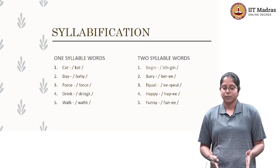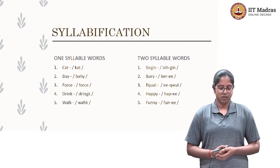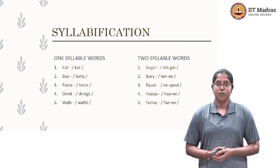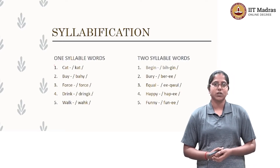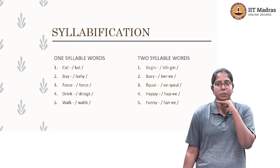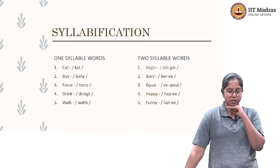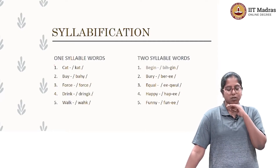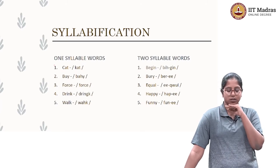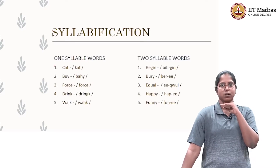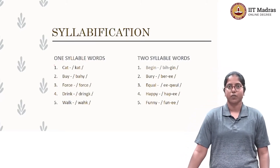Now let's look at syllabification — how many syllables these words have. Cat, buy, force, drink, walk. One test of syllabification is to keep your hands under your jaw and pronounce the word, and see how many times your jaw drops — that many syllables a word has. My jaw drops one time every time I pronounce these words, so they each have one syllable.